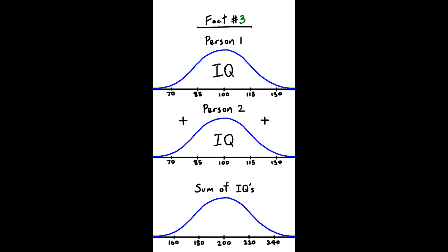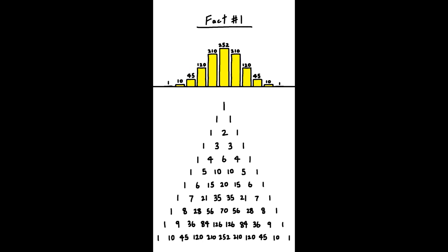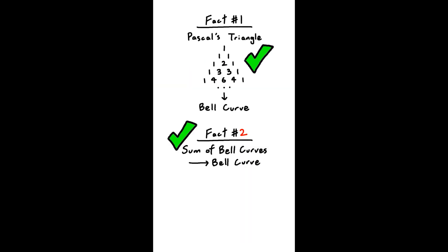Last fact, if instead of adding the IQs together, you multiply them, the distribution will still remain a bell curve. Pause now to think about which fact is fake. The first one is true. In fact, this is how the normal distribution was first discovered. De Moivre was studying coin flips, and he noticed that as the number of trials increased, the distribution approached the bell curve. The second fact is also true, but the third one is false.